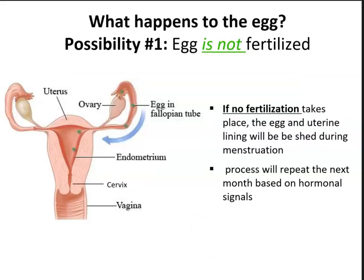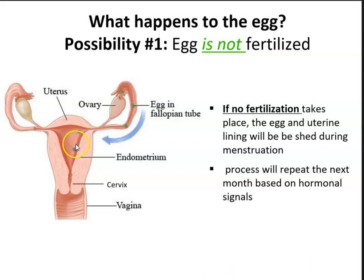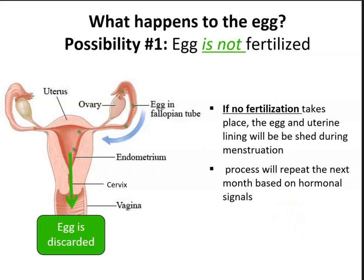What could happen to the egg? First possibility: once a month when the egg is ovulated, it is not fertilized. The egg goes into the fallopian tube; if no fertilization takes place, the egg and the uterine lining are shed during menstruation. The endometrium sheds since the egg does not implant. This process of ovulation will then repeat the next month based on specific hormonal signals.